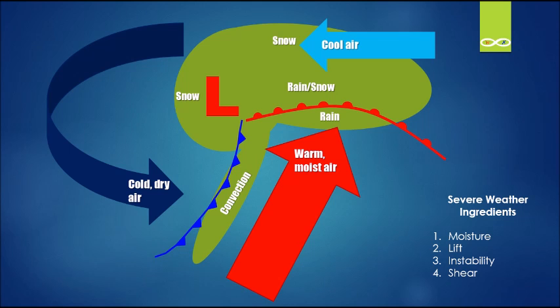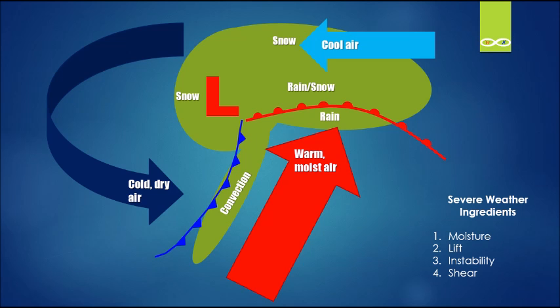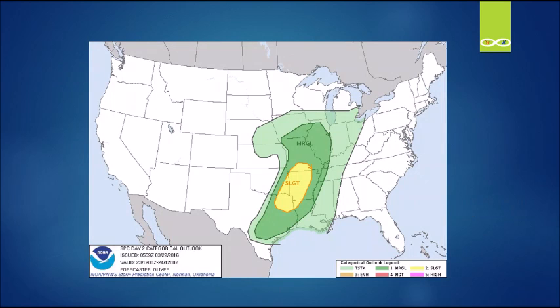The moisture and instability are coming from the warm moist air flow. The lift is provided by the cold front — think of it as a ramp that air can rise up along. The shear comes from the differing wind directions between the cold dry air and the warm moist air. This is why the Storm Prediction Center has a slight risk of severe weather for tomorrow along the frontal boundary.